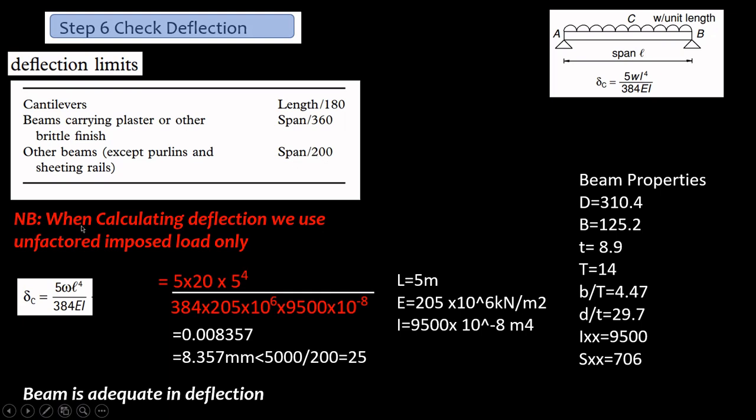Let's calculate the deflection. Calculating deflection we use unfactored imposed load only. And this beam has only UDL, there's no point load, so we're going to use this formula: deflection is 5WL⁴/384EI.